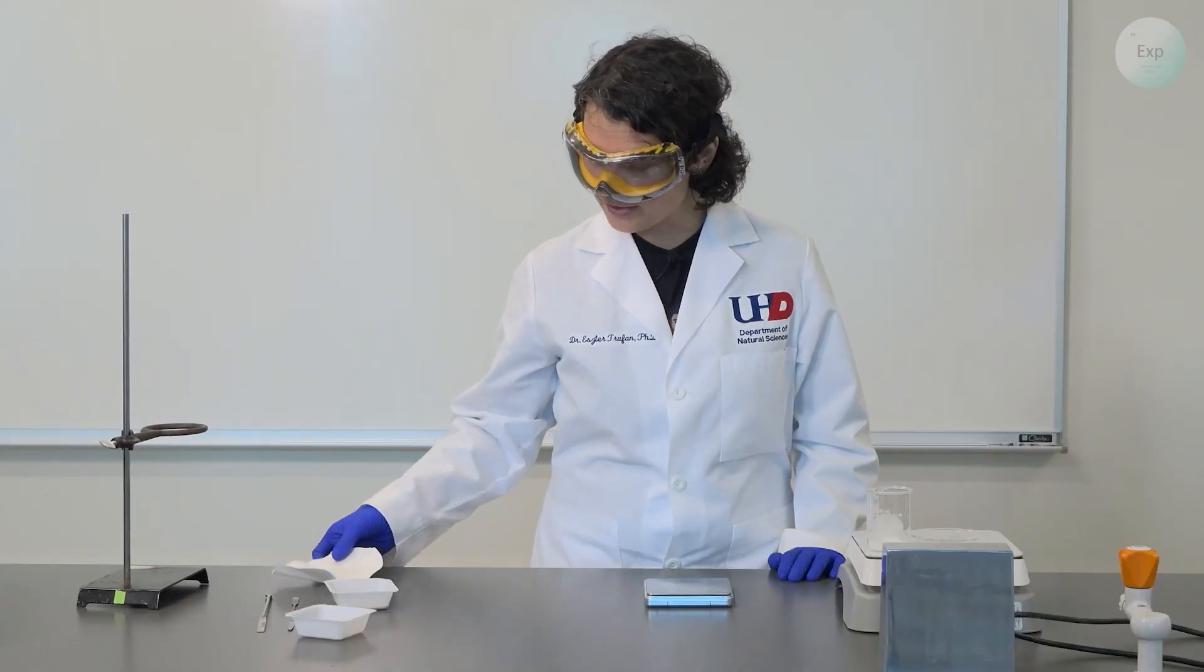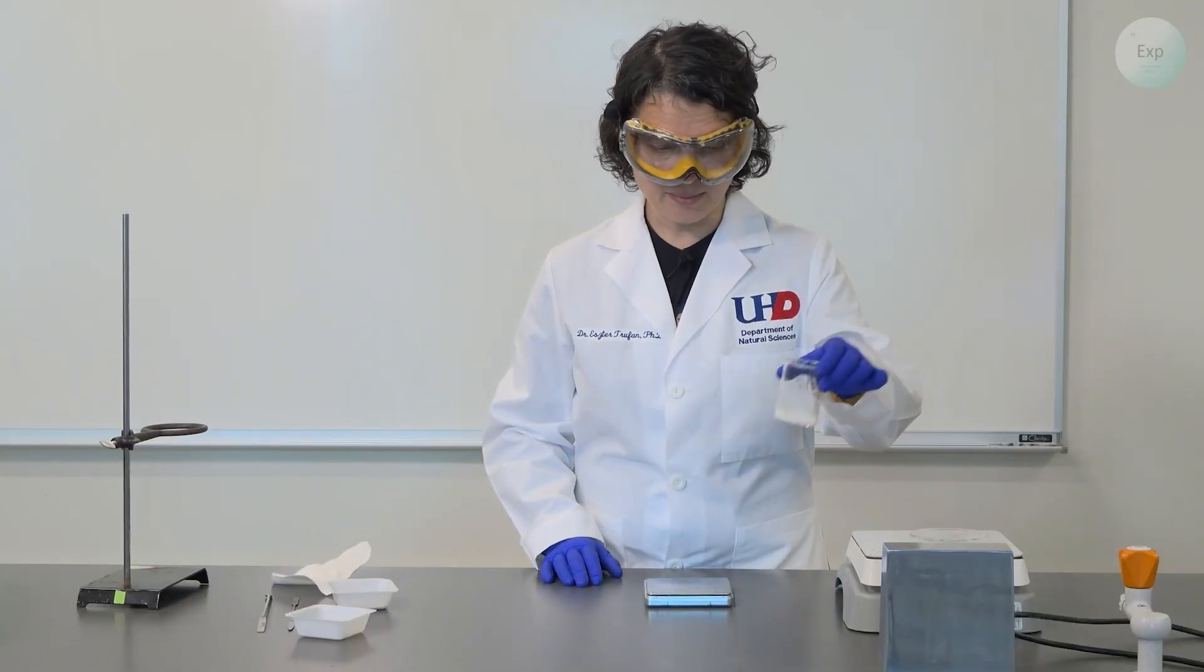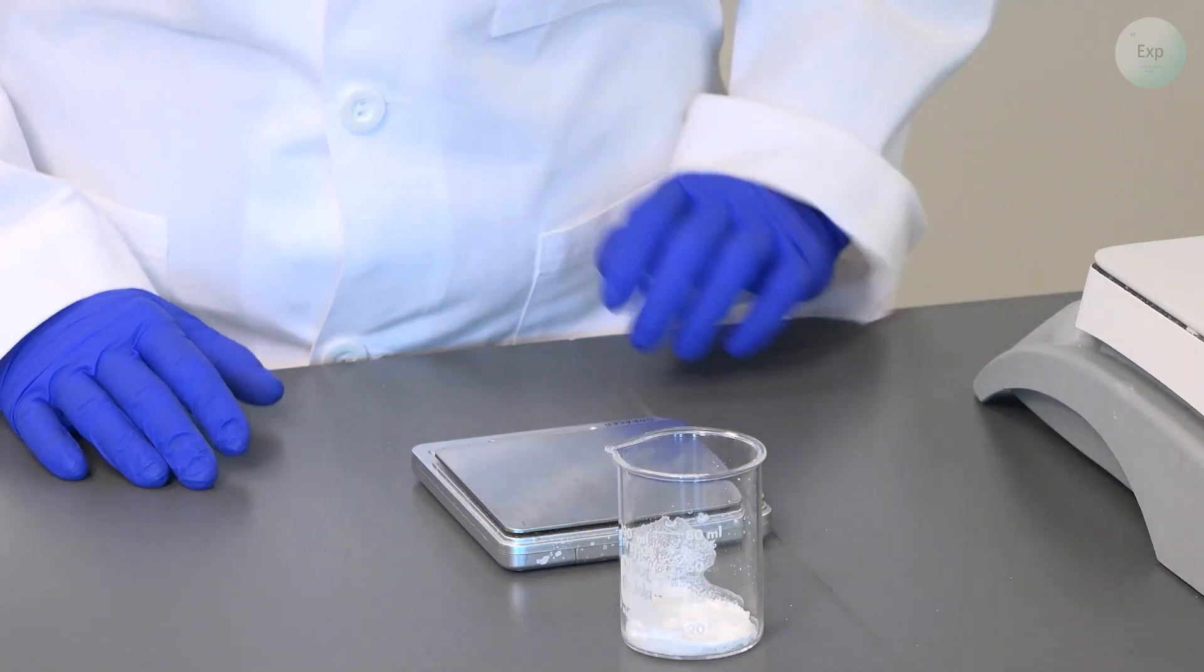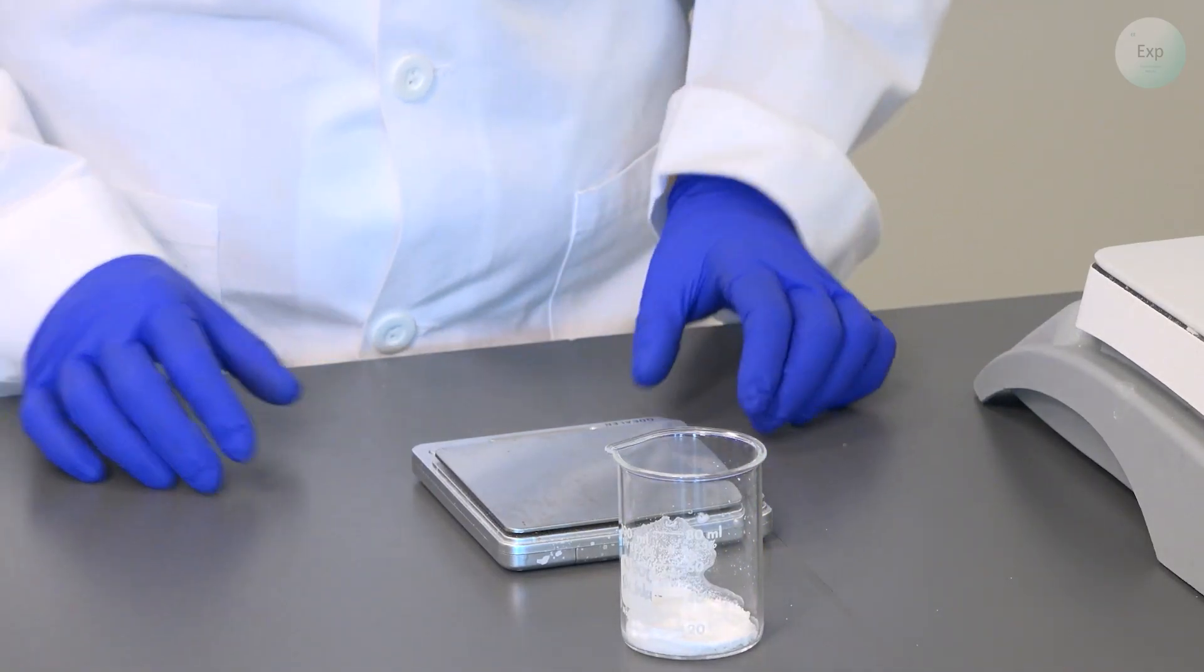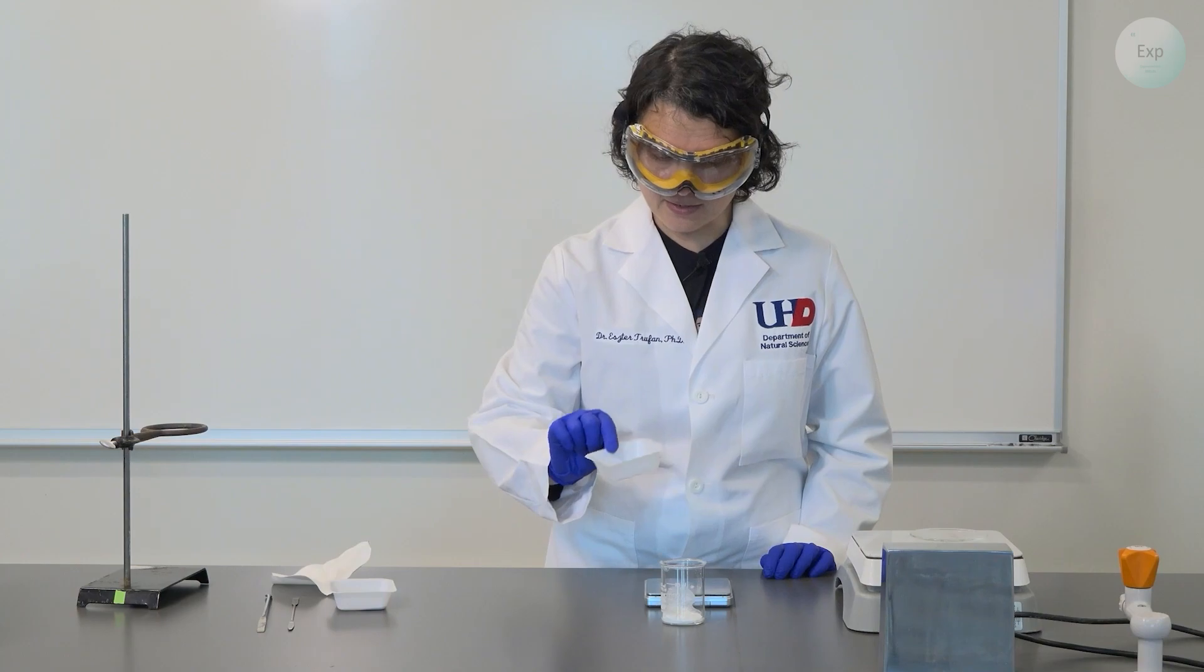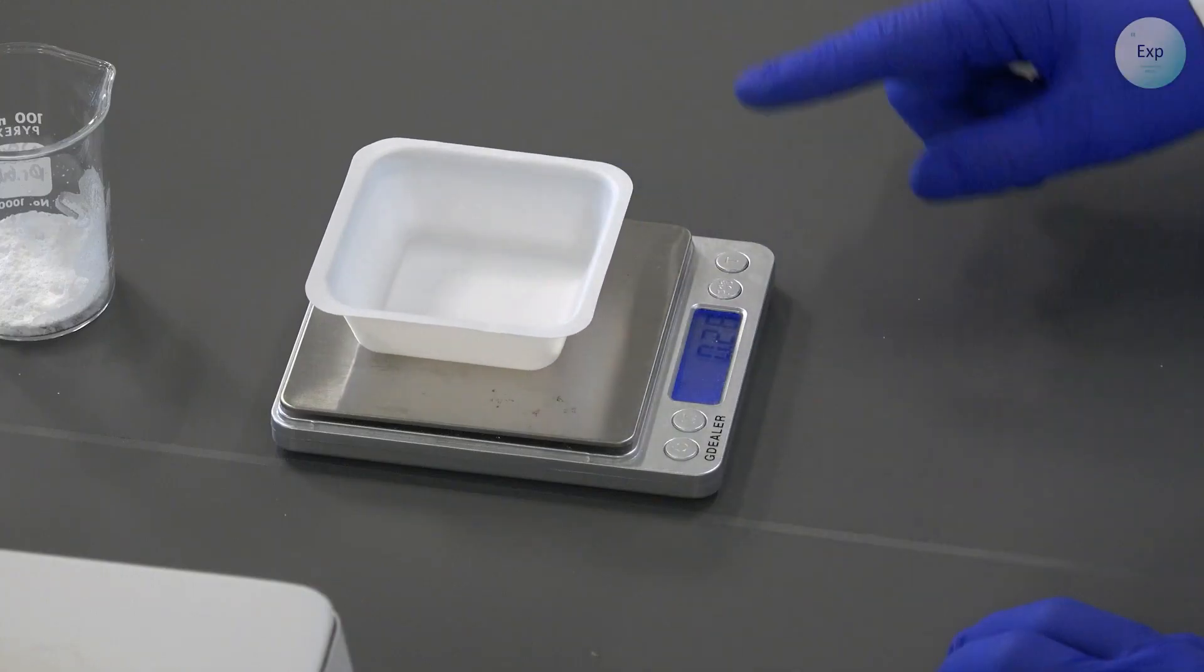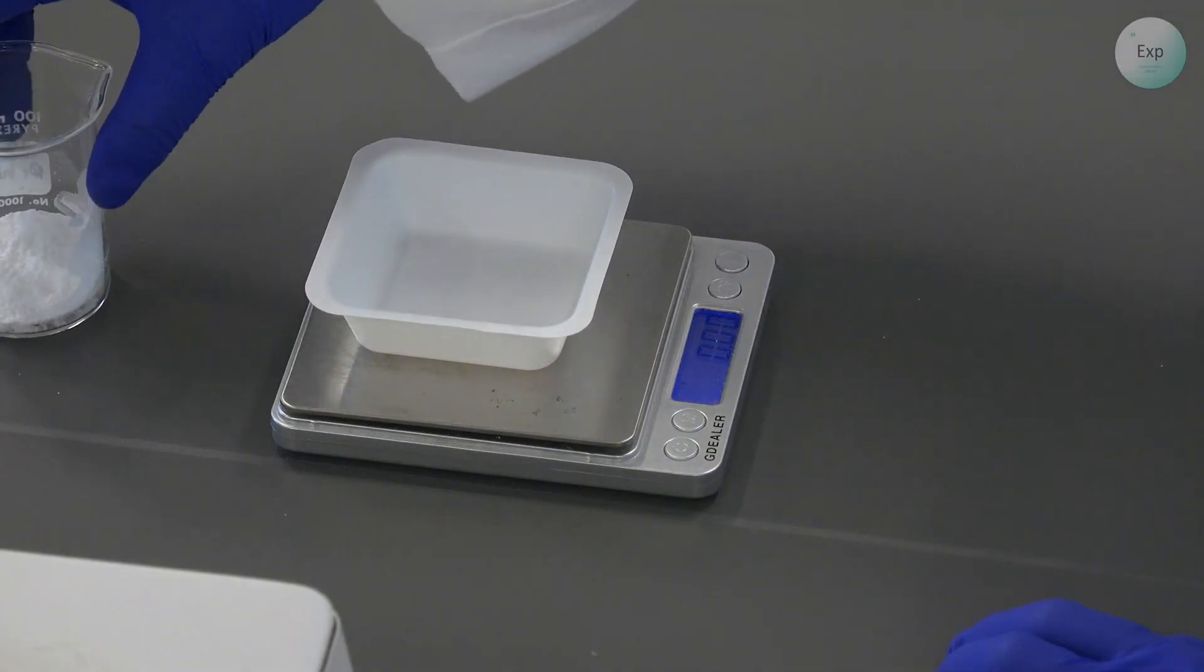Next, we're going to do the same thing with the salt, except the salt is in this beaker and we'll need to scrape it out carefully. The first thing we do is take a clean weighing boat, place it on the scale, and tare it.